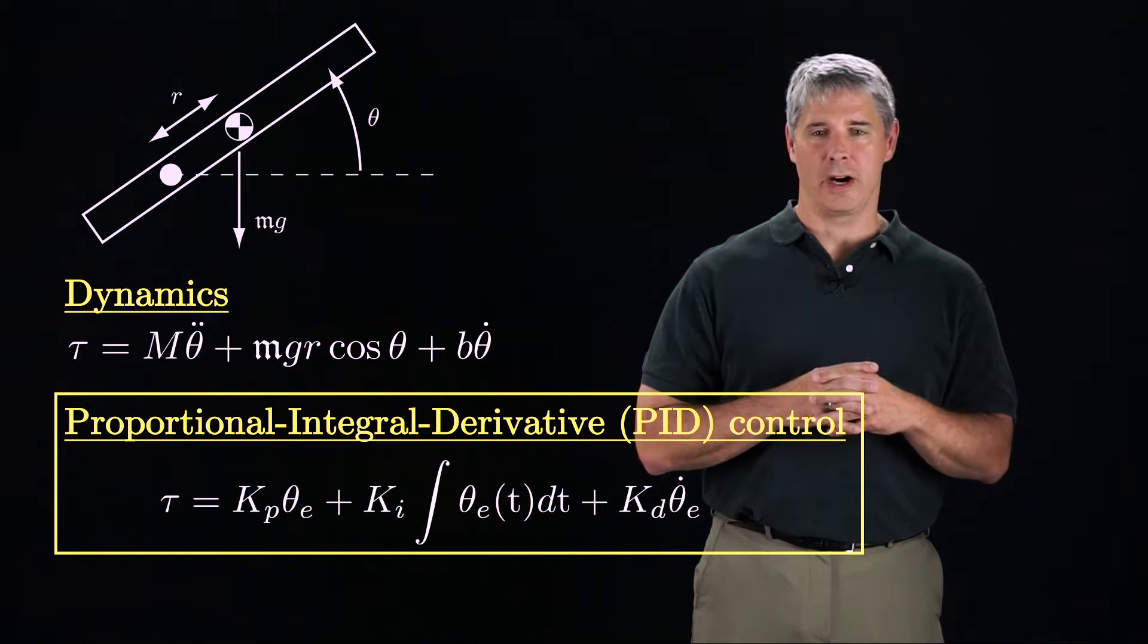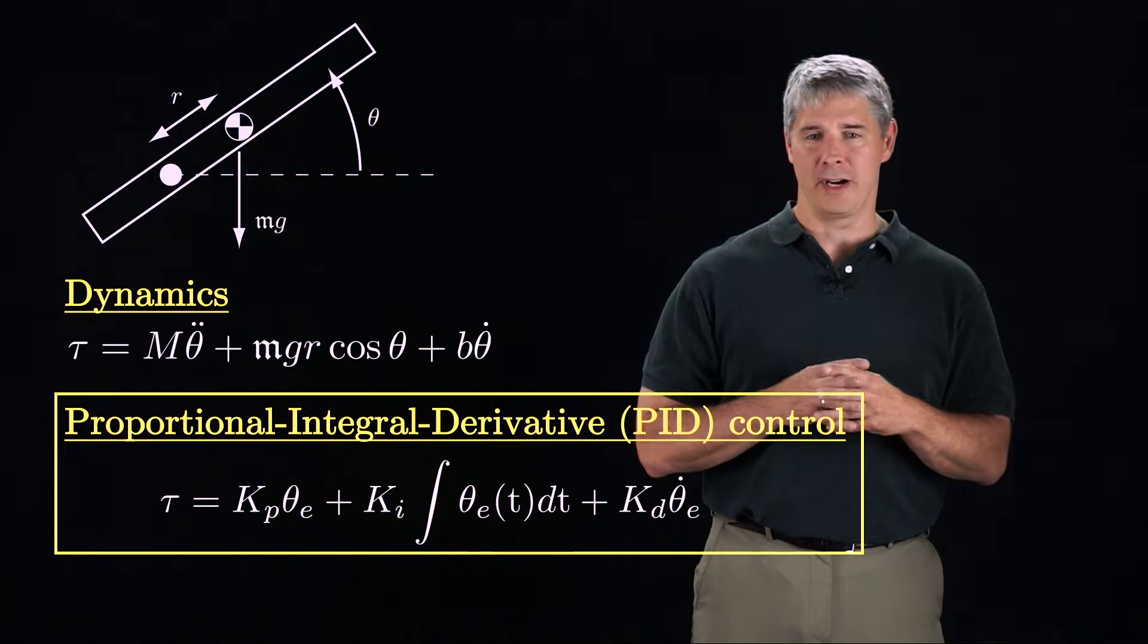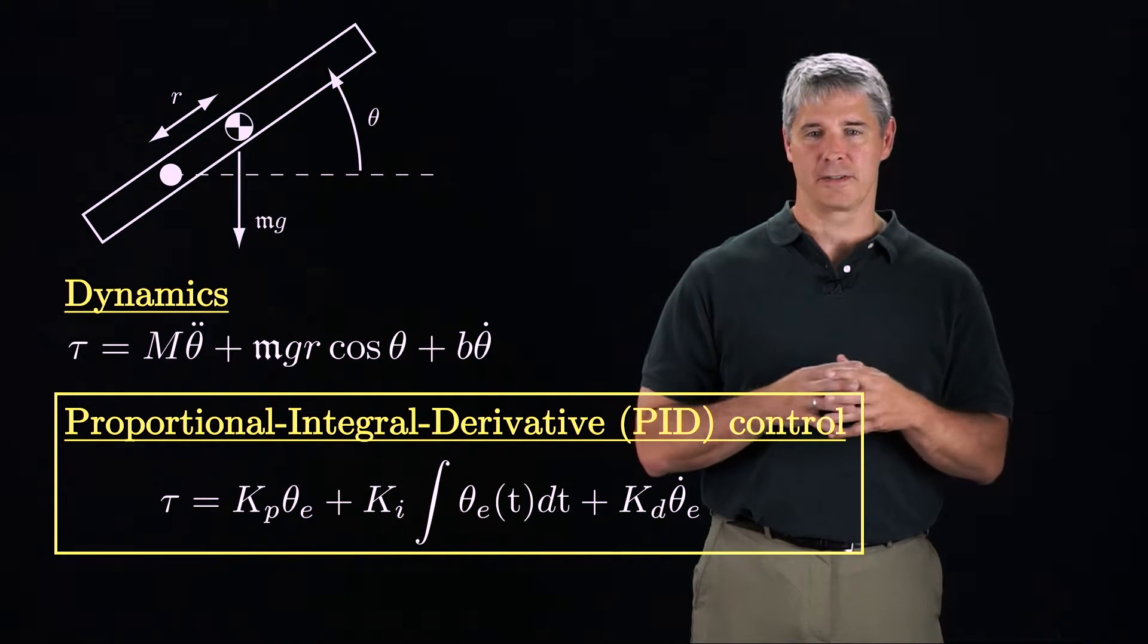Evaluating the derivative of the error requires a speed sensor for the joint. This speed sensor is usually simulated by numerically differencing the position readings from a joint encoder.